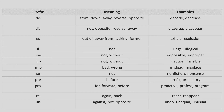NON is another prefix which means not — for example, non-fiction, nonsense. PRE is a prefix which means before — for example, prefix, prehistory. PRO is another prefix which means forward or before — for example, proactive, profess, program. RE means again — for example, react, regain, reappear, repay. UN is used to form the opposite of the root word — for example, undo, unequal, unusual, unhappy. These are some of the commonly used prefixes in English.